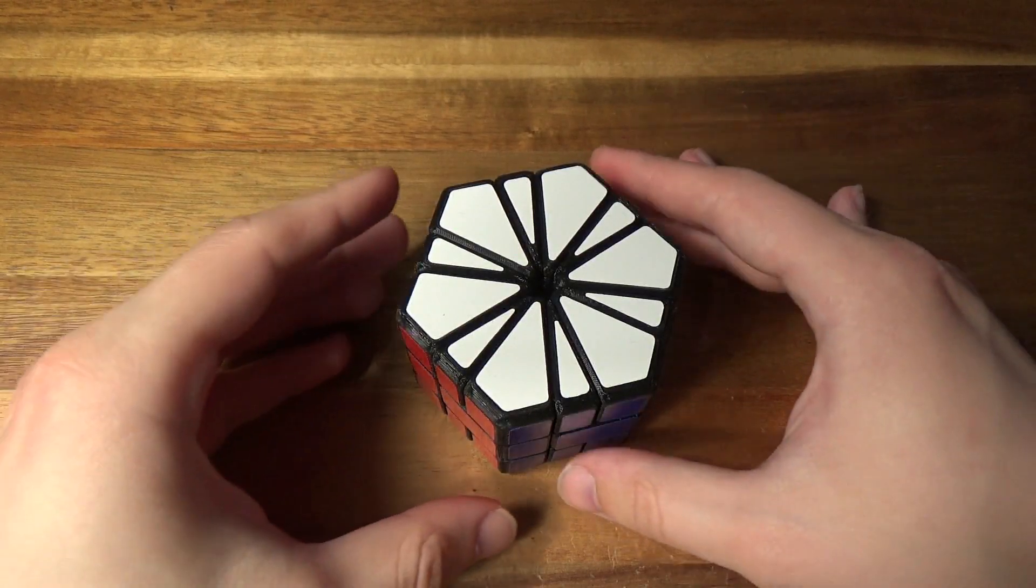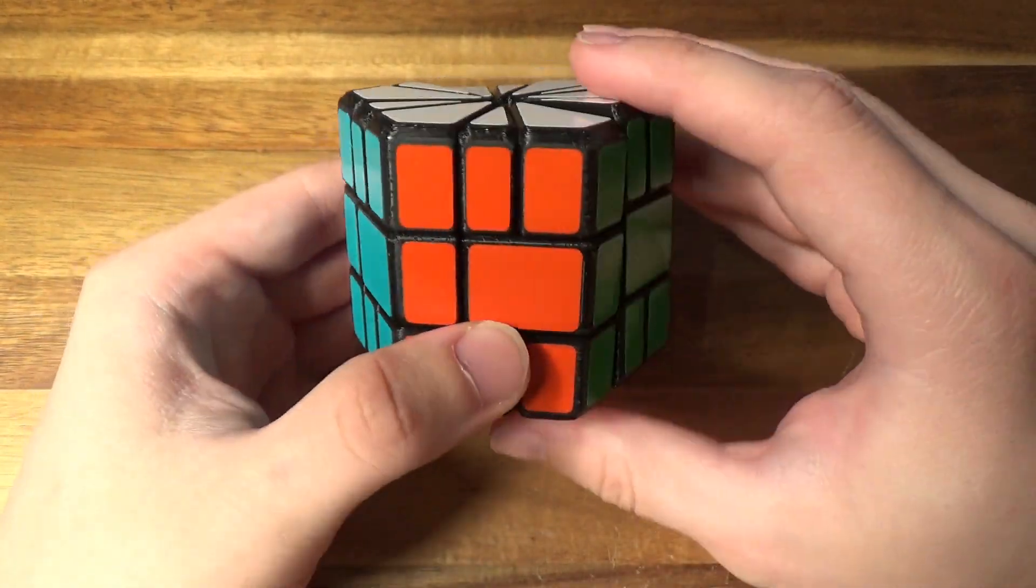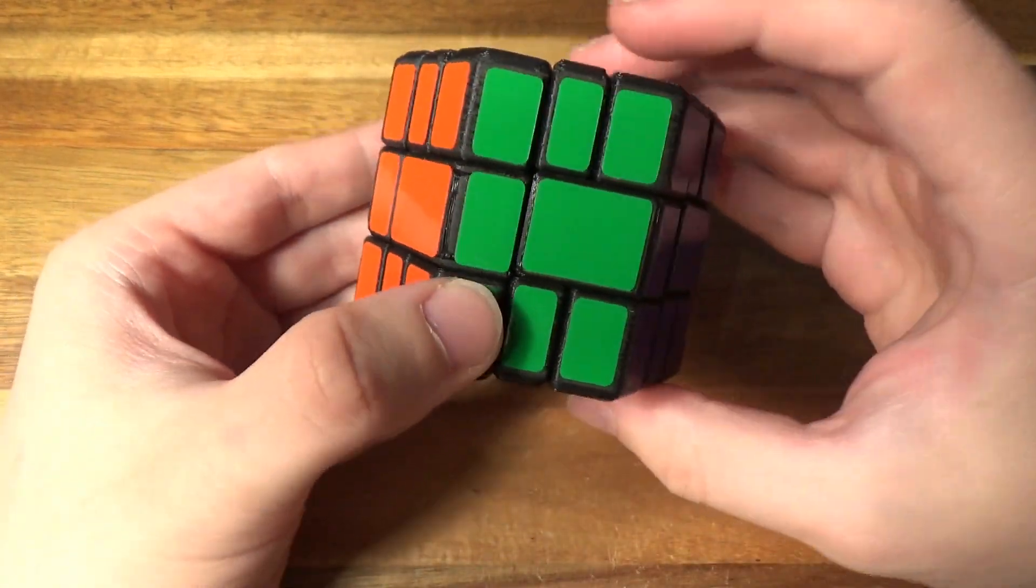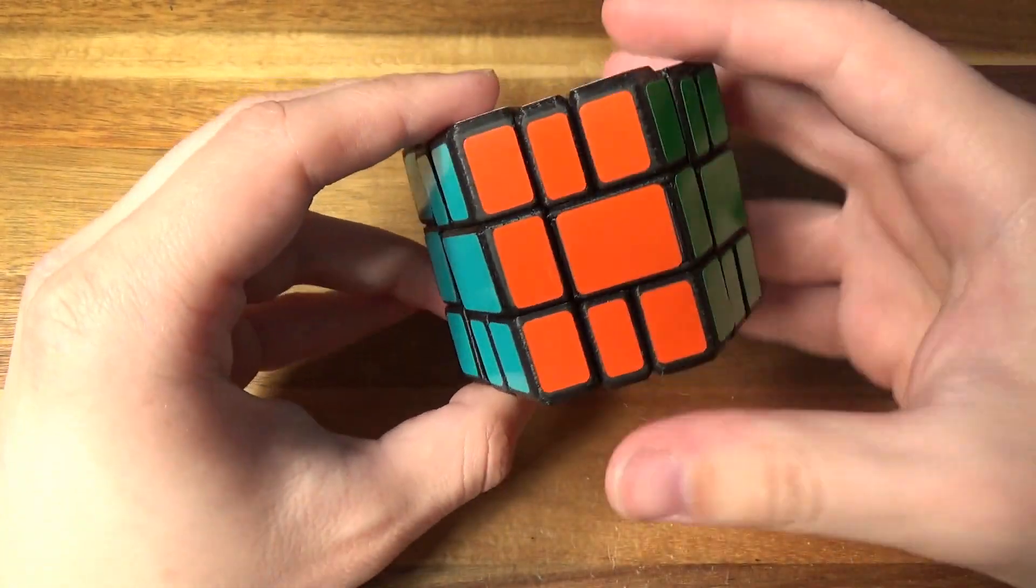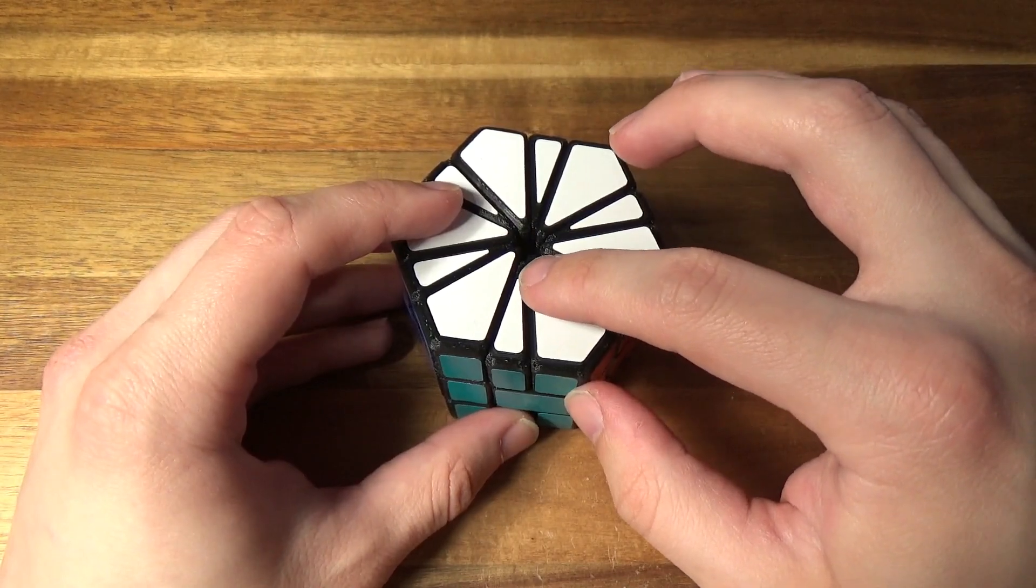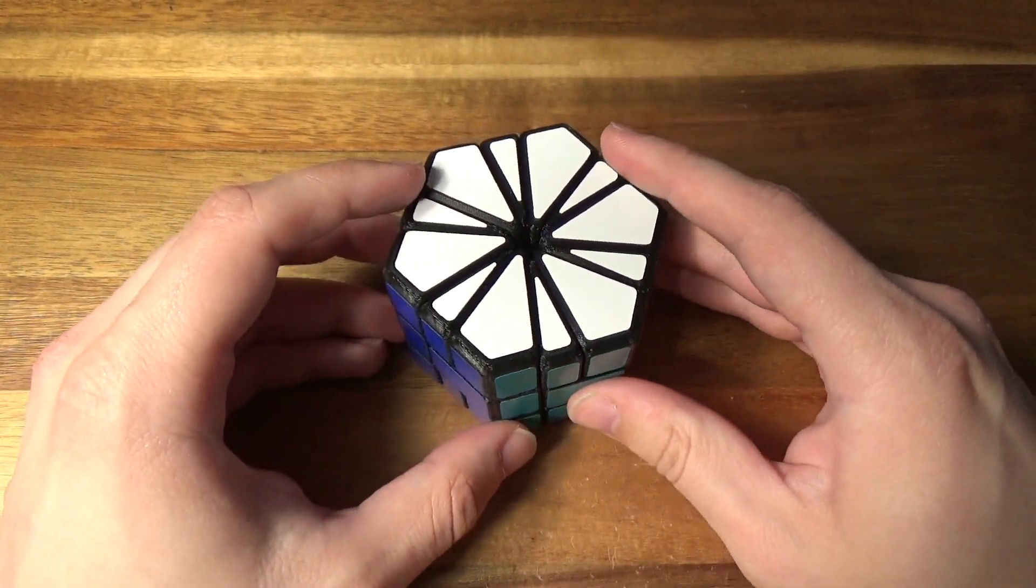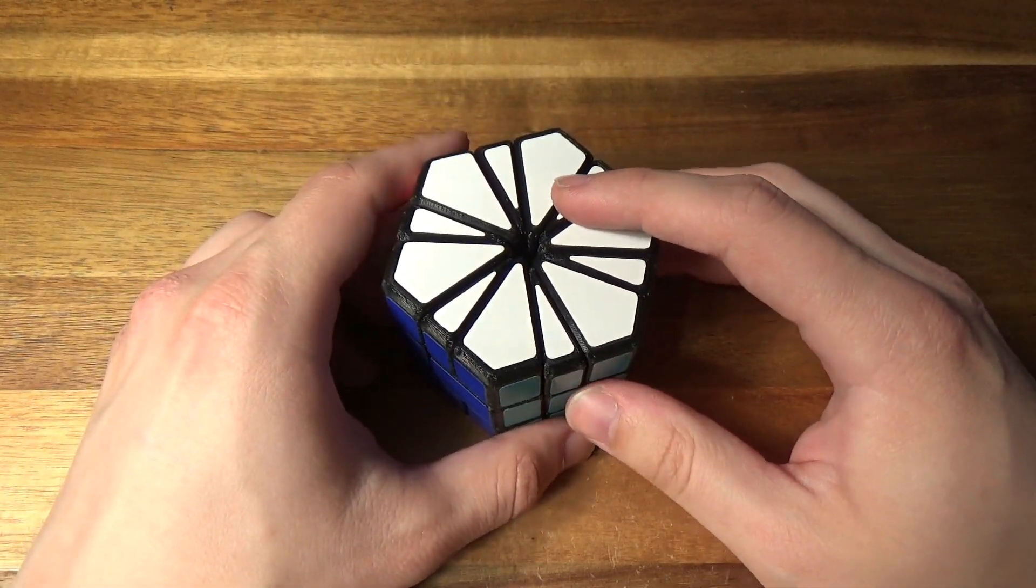Several weeks ago I showed you the Hexagon 1, a hexagonal equivalent of the Square One with an unbandaged central layer to allow for more movement. You would think making a Hexagon 2 would be pretty simple - just split the corners in half and leave everything else the same. Unfortunately though, this Hexagon 1 had a minor flaw.